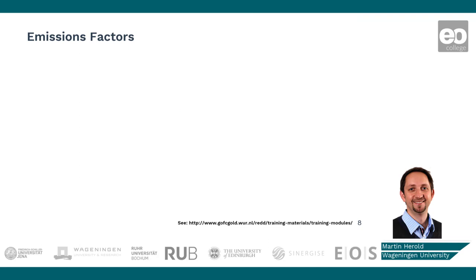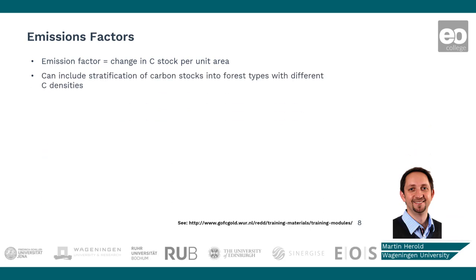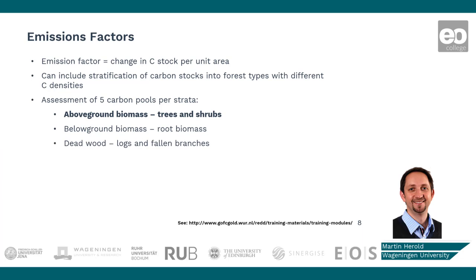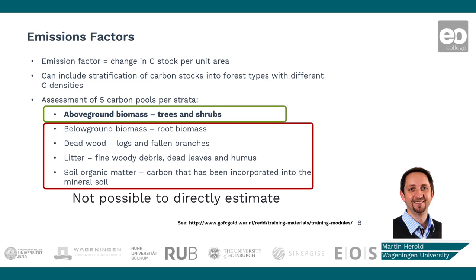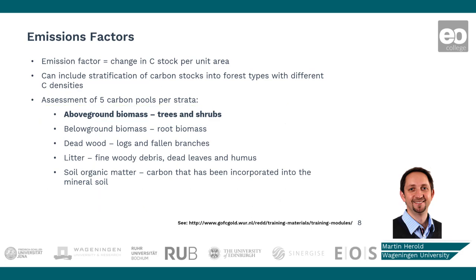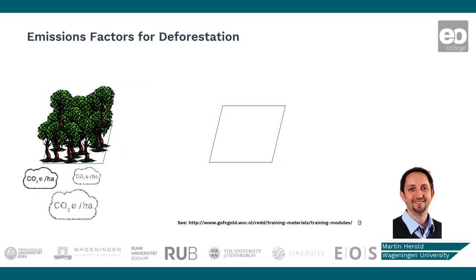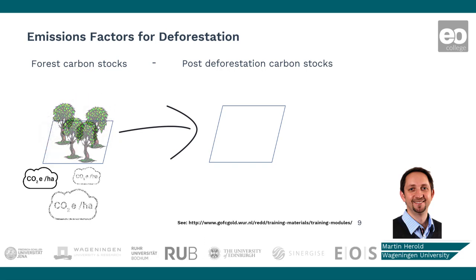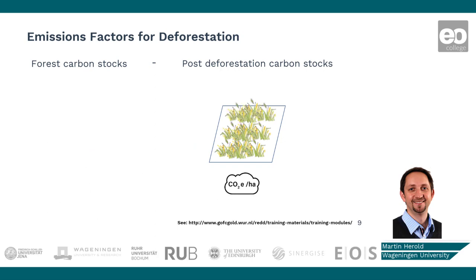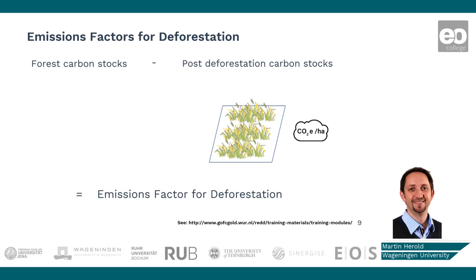When we talk about emission factors, these represent a change in carbon stocks per area unit. There are different pools of carbon, including the live pools — above-ground biomass such as trees and shrubs, below-ground biomass such as root biomass — but also dead wood, litter, and soil. From an Earth observation perspective, we can estimate above-ground biomass; the other pools are not often directly estimable from EO approaches. An emission factor is essentially the difference between carbon stocks before an event — for example, deforestation — and the carbon stocks after that event, such as conversion from forest to cropland.